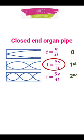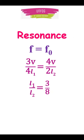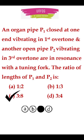Then for closed end pipe, first overtone is 3v by 4l, and for open pipe, third overtone is 4v by 2l. In resonance, both frequencies are equal, so l1 upon l2 will come out to be 3 upon 8. So here, option c is the right answer.